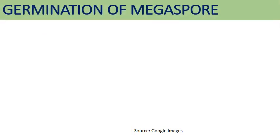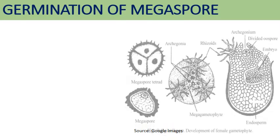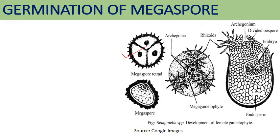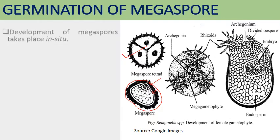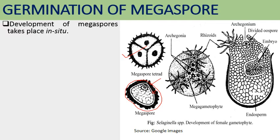Germination of the megaspore is endosporic, forming the mega gametophyte. The thick megaspore wall is differentiated into outer exine (variously ornamented with dentations or spine-like structures) and inner delicate entine, with a mesospore layer in some species. Development of the megaspore takes place in situ — it germinates within the megasporangium and gives rise to the mega gametophyte. The female reproductive structure formed is known as archegonia.